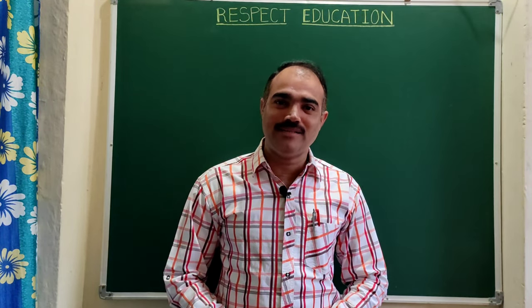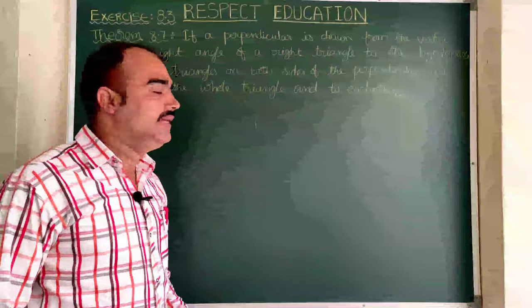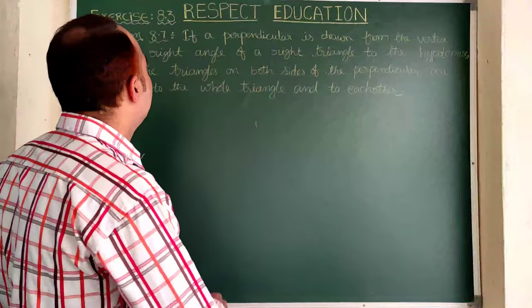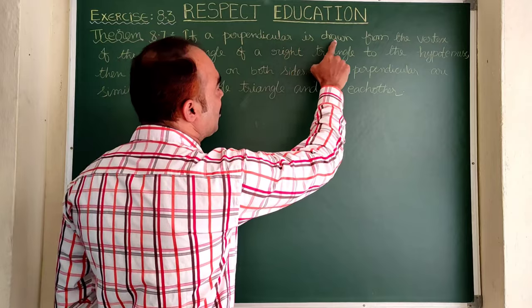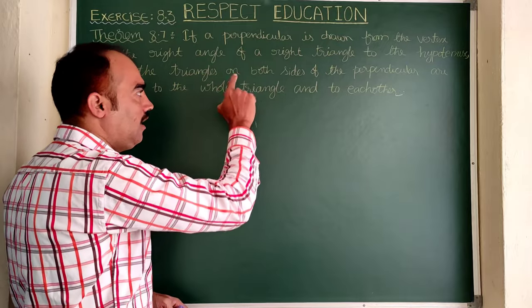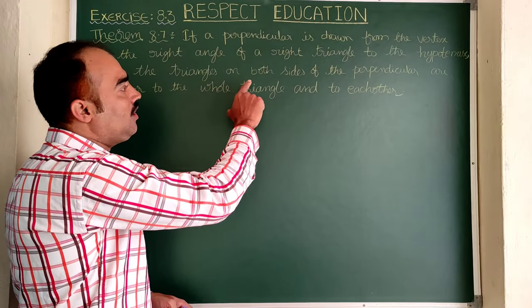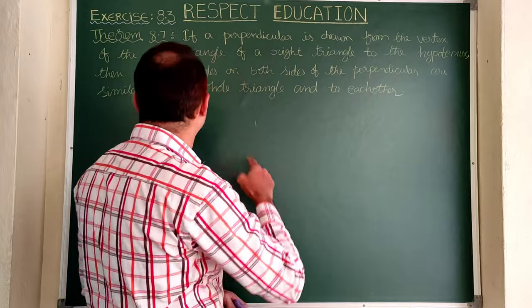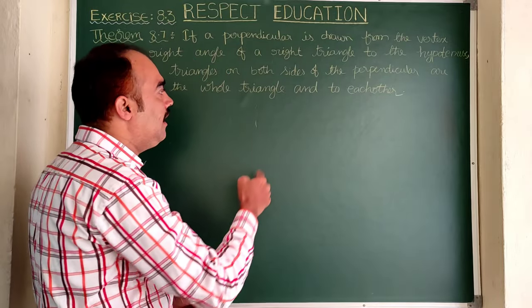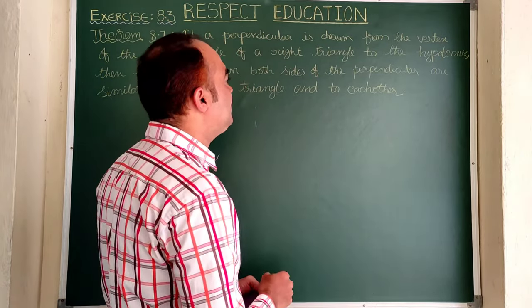Welcome back to our channel, Respect Education. Now let us see Theorem 8.7: if a perpendicular is drawn from the vertex of the right angle of a right triangle to the hypotenuse, then the triangles on both sides of the perpendicular are similar to the whole triangle and to each other. Let us draw a suitable diagram for this statement.